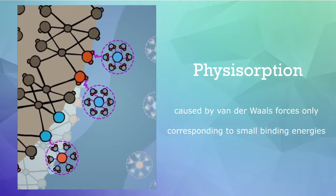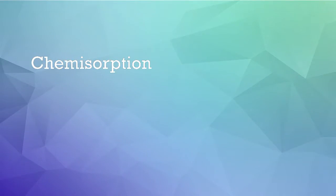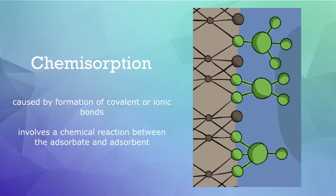In contrast to physisorption, chemisorption involves the formation of covalent or ionic bonds. Basically, it involves a chemical reaction between the adsorbate and the substrate.